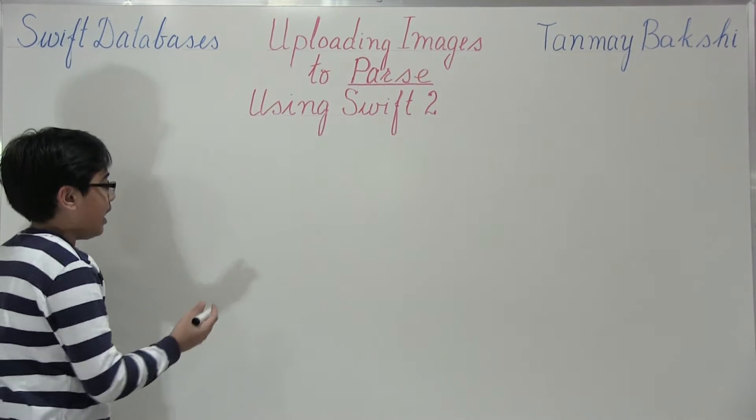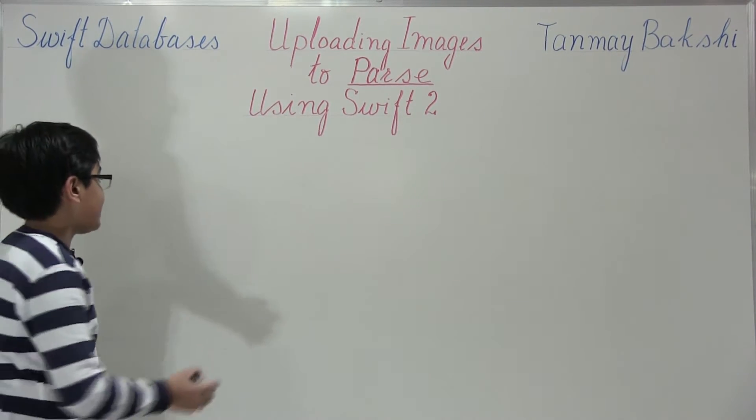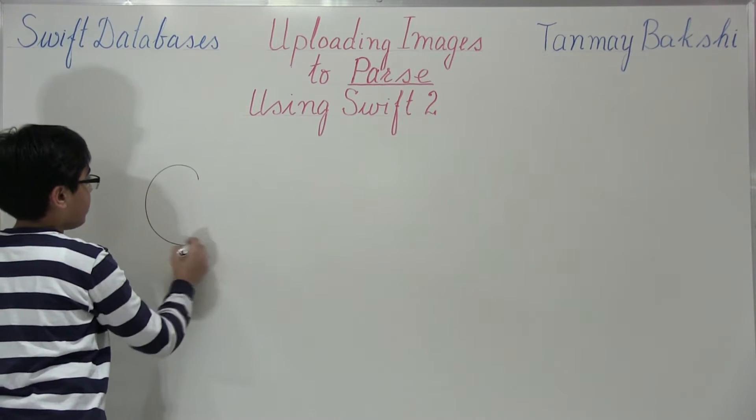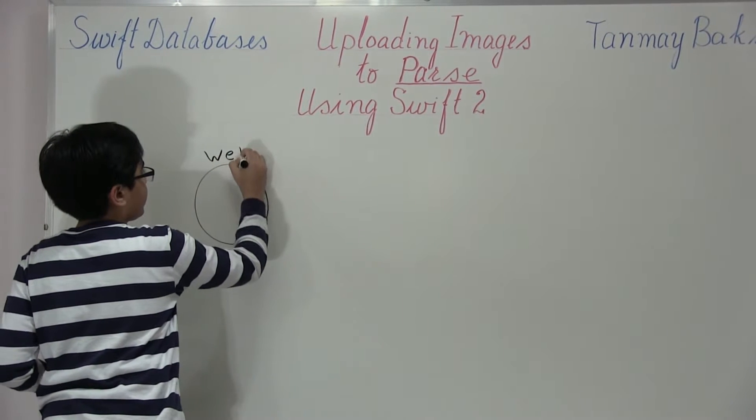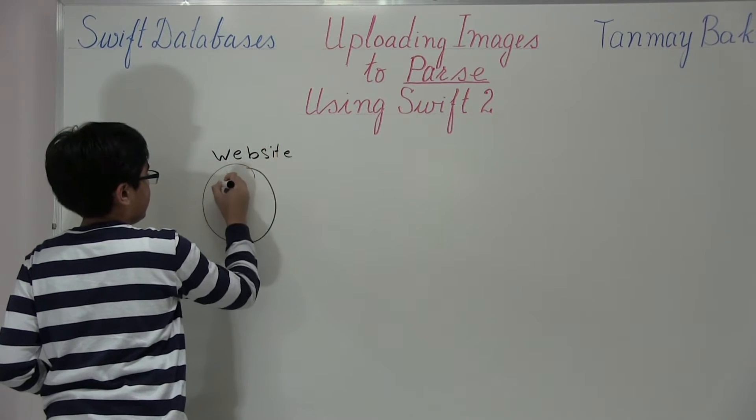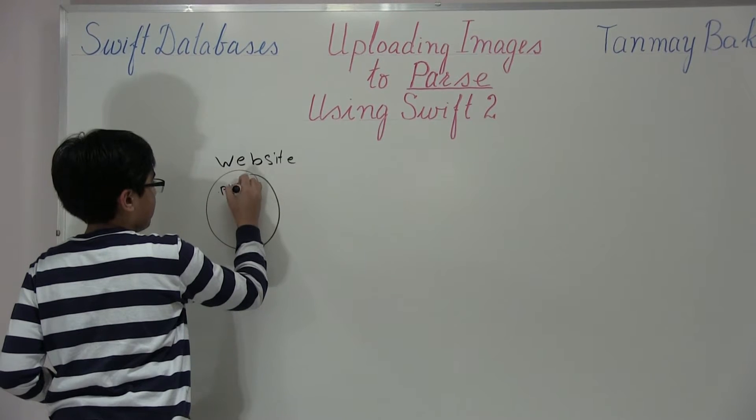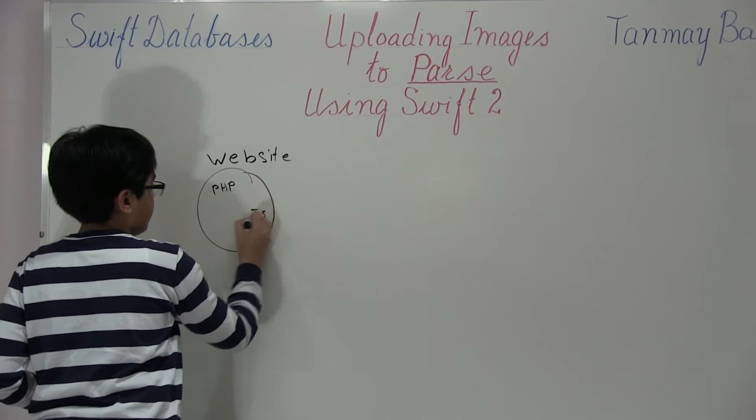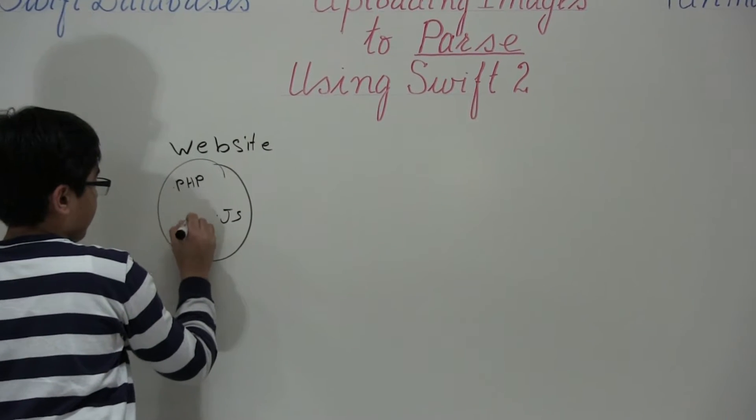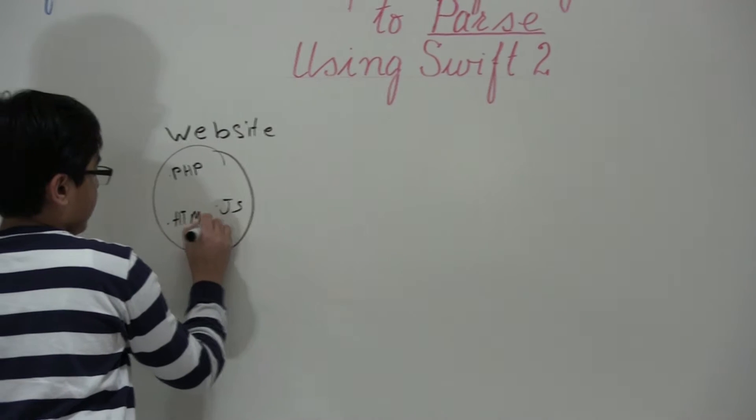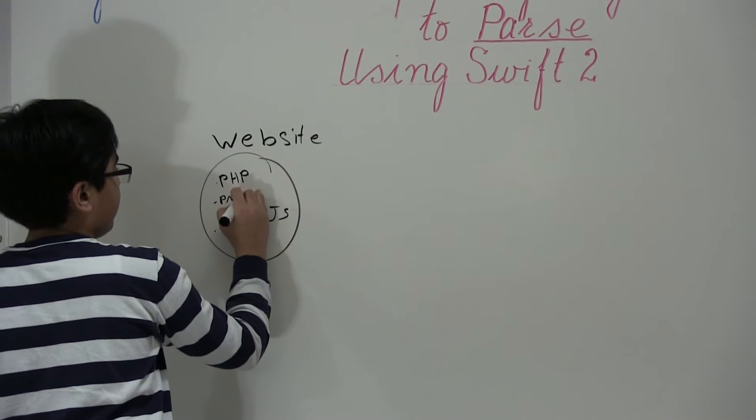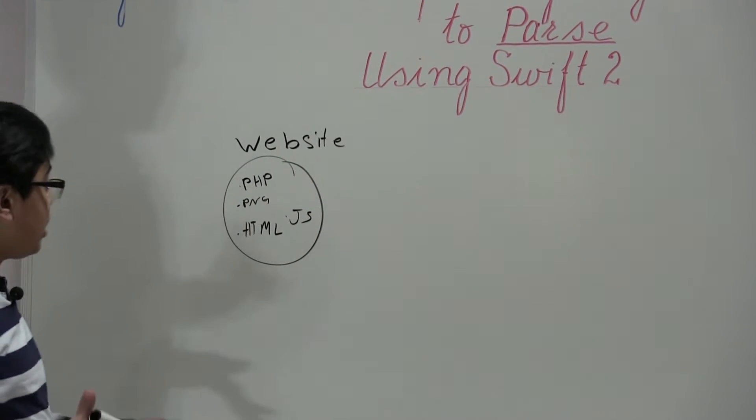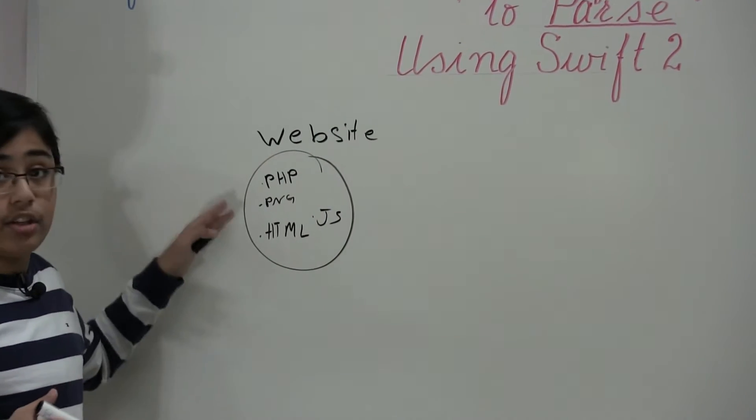First of all, let's see. So basically what's going to happen is let's say we have the internet over here or someone's website in specific. And it has all these PHP files, has JS files, HTML, right. However, it also has a PNG file. In our case, it's actually JPG, but let's just pretend it's a PNG file.